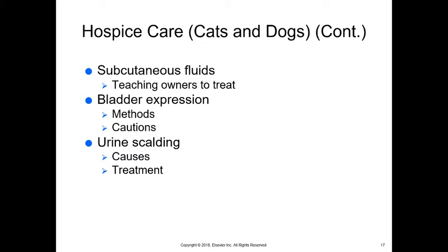Subcutaneous fluids are commonly administered to older animals that cannot get up to drink or have diseases causing rapid fluid loss, such as kidney disease. Owners can be taught to administer subcutaneous fluids at home. Bladder expression may be needed for animals unable to void on their own; owners can be taught this as well, but care must be taken not to burst the bladder. If incontinence is present, urine scalding is a concern — the skin must be kept clean and dry, as urine's chemicals and pH can damage the skin.